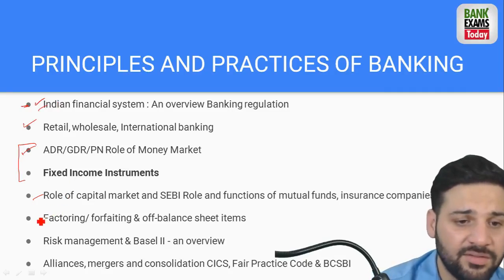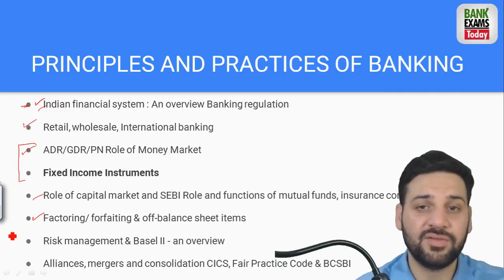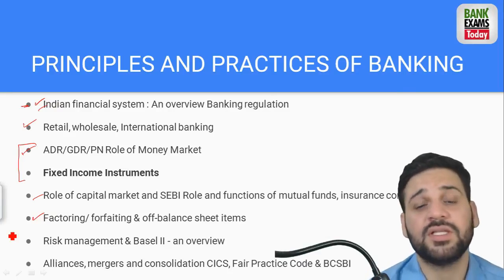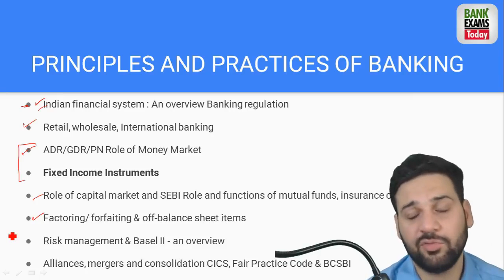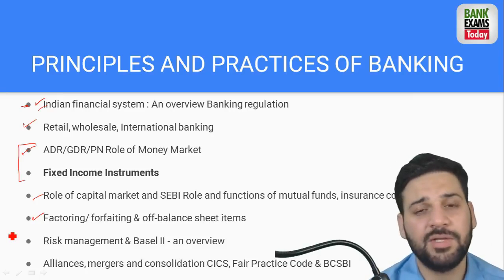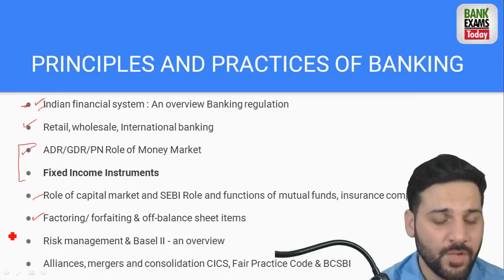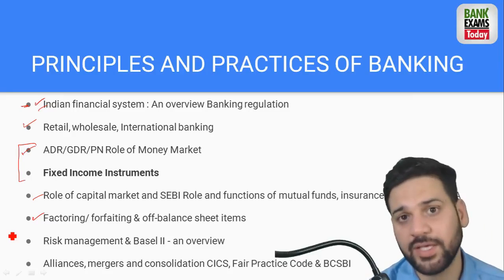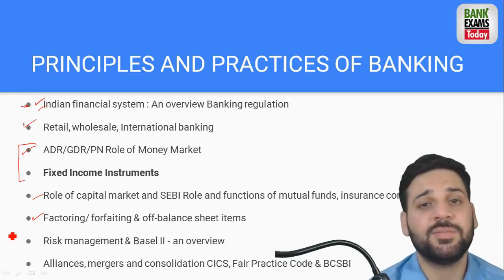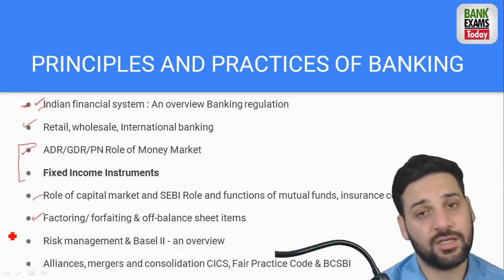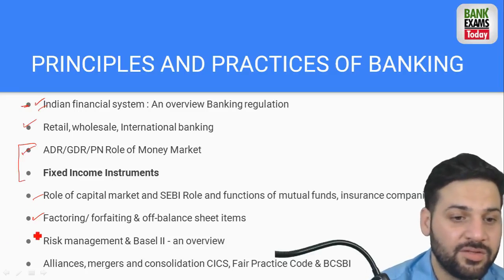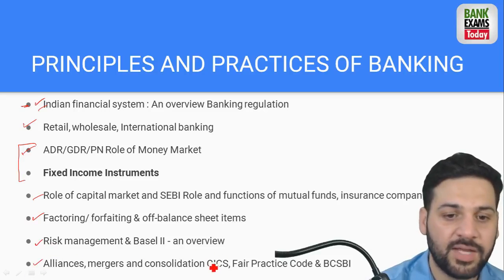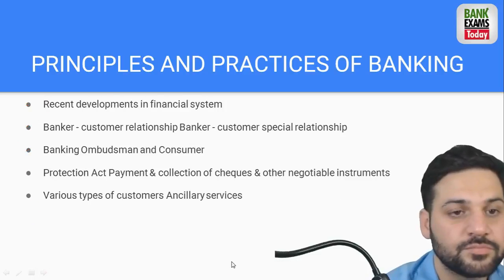Topics also include factoring, forfeiting, off-balance sheet items, risk management, and Basel 2 basics. Previously there was the SARFAESI Act but recently that act has changed - it has been framed out recently. The bankruptcy code that has come is very important to read. We have already updated it in our latest capsule. Mergers, consolidations, fair practices, codes - all of this has been added to our notes.